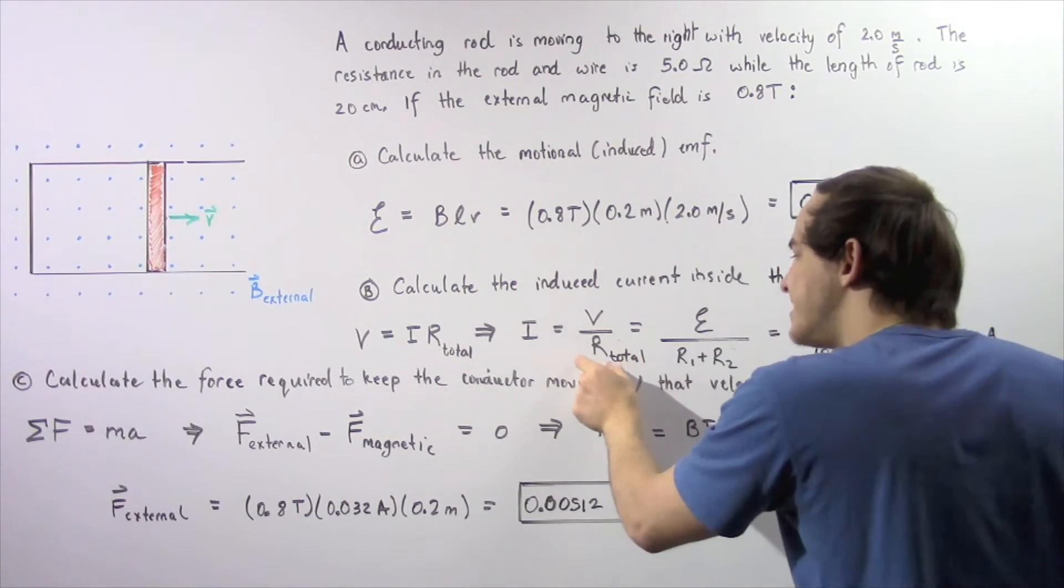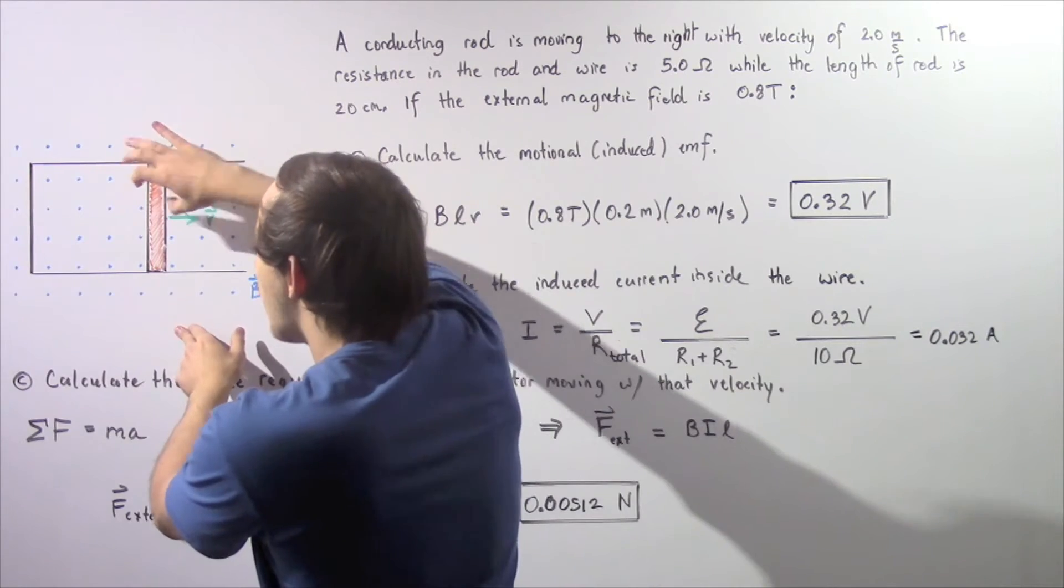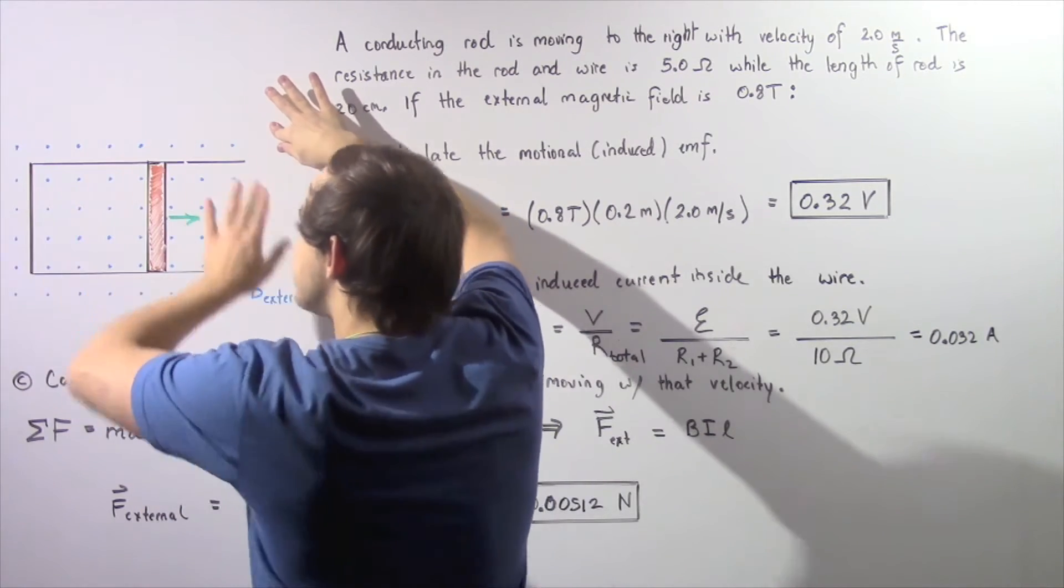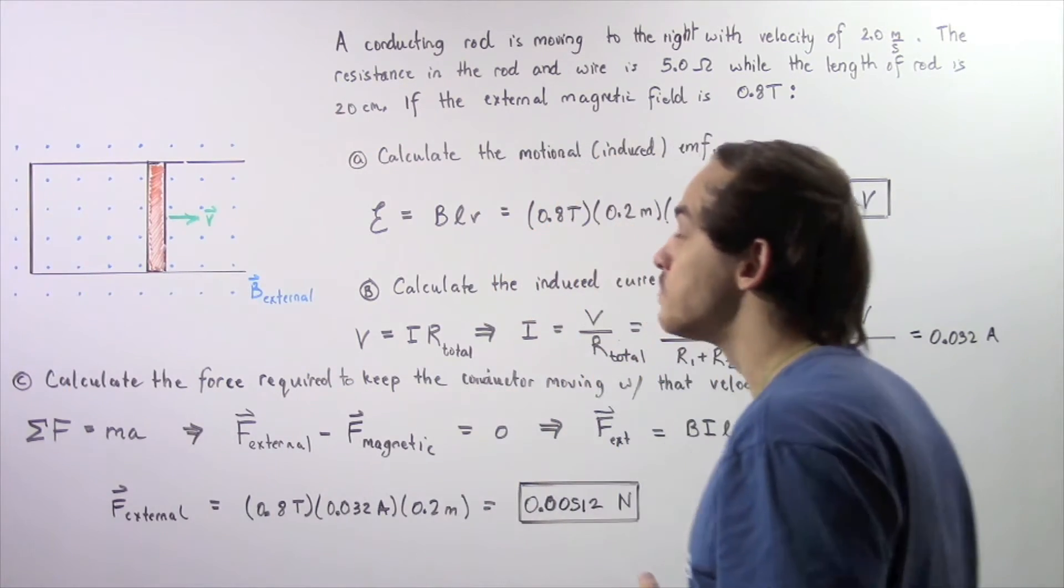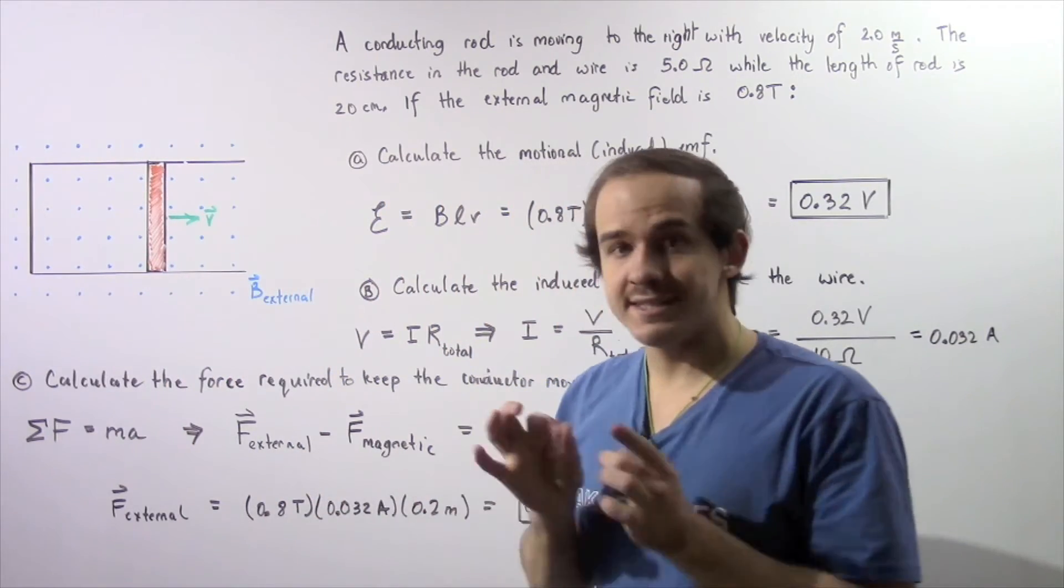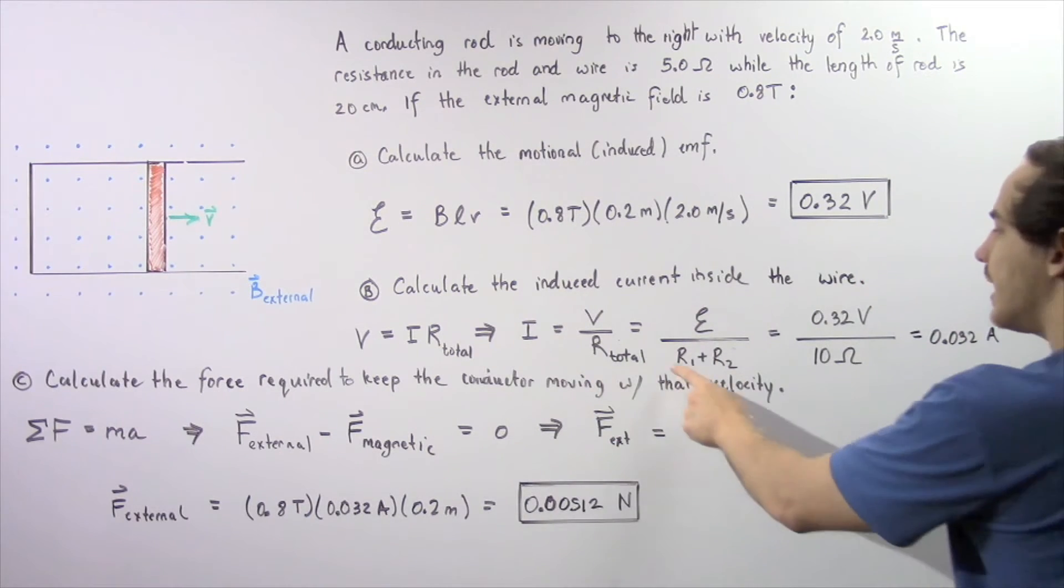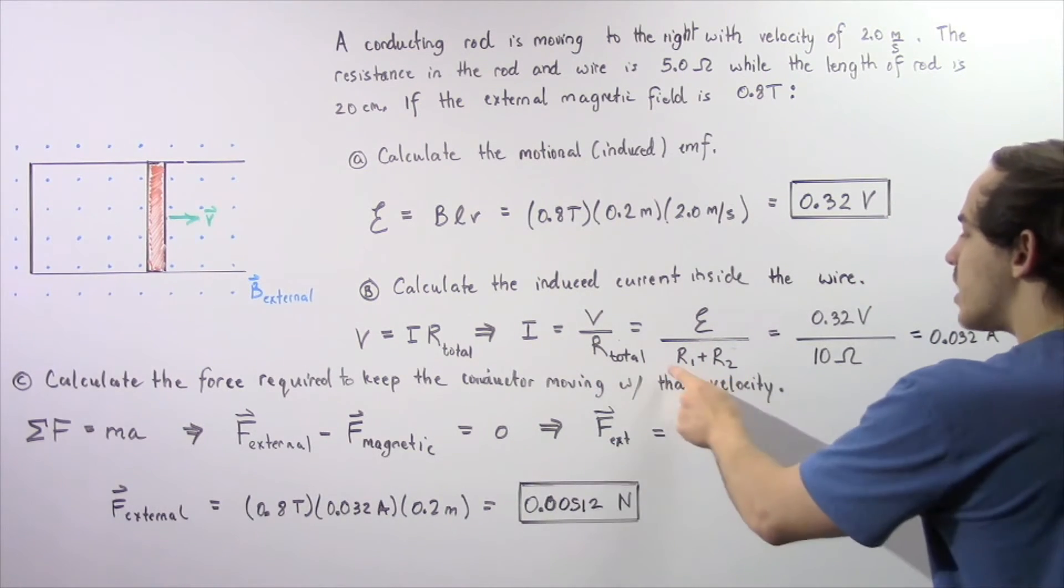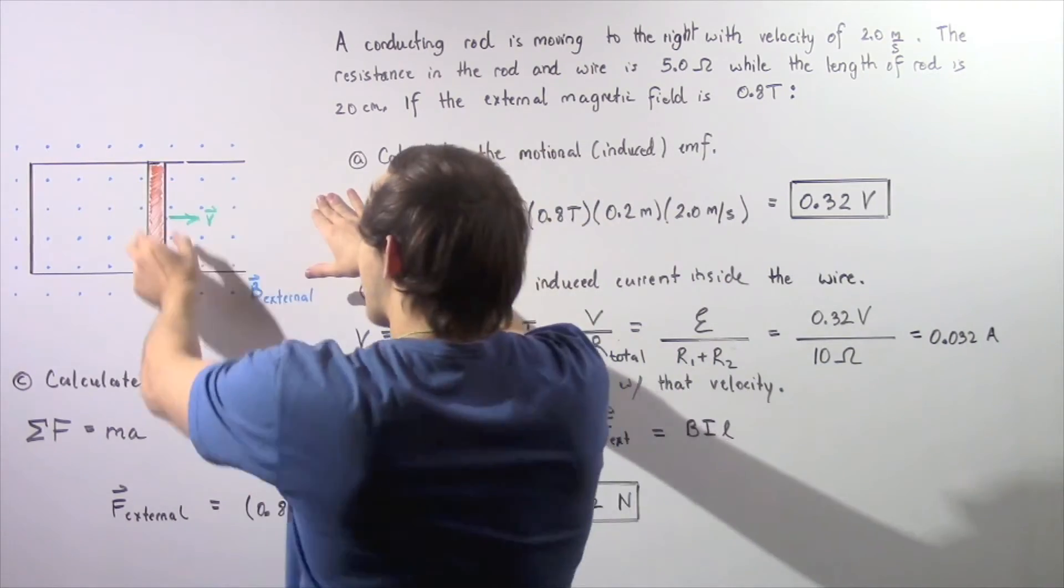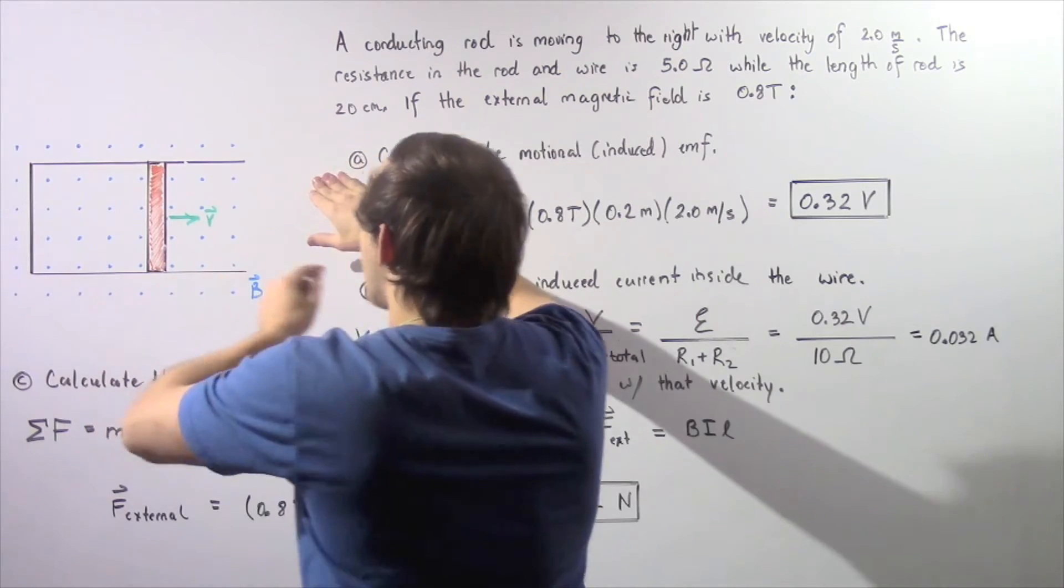Now the total resistance is simply the sum of the resistance found in our rod as well as in our conducting wire. Because these two resistors are placed in series, the total resistance is given by taking the sum, where R1 is the resistance in our rod and R2 is the resistance in our wire.